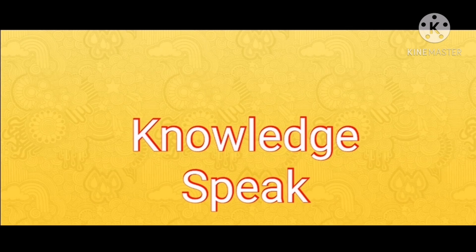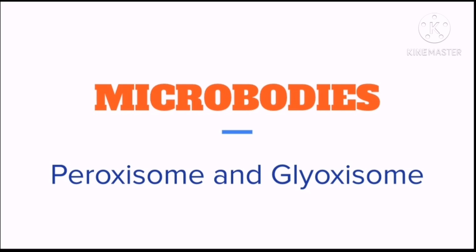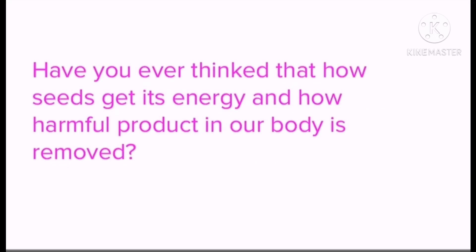Hello, it's me Deem with Knowledge Speaks. Please don't forget to subscribe — this will really help. So let's start today. We are going to learn about very important organelles called peroxisomes and glyoxysomes. They both are collectively called microbodies because they are very small in size. They are very crucial for living organisms.